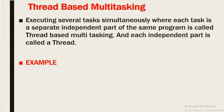The second type is thread-based multi-tasking: executing several tasks simultaneously where each task is a separate independent part of the same program is called thread-based multi-tasking, and each independent part is called a single thread. This type of multi-tasking is best suitable at the programmatic level.